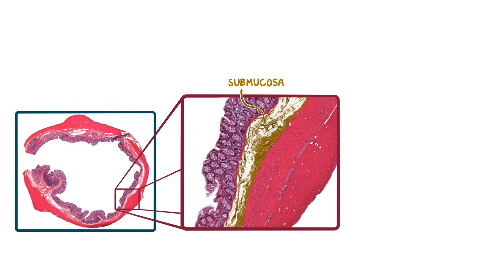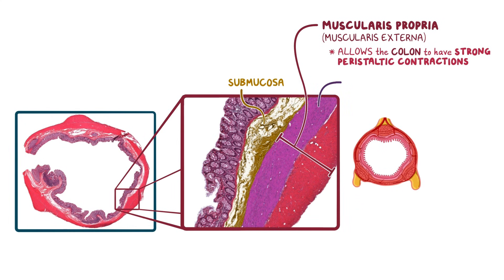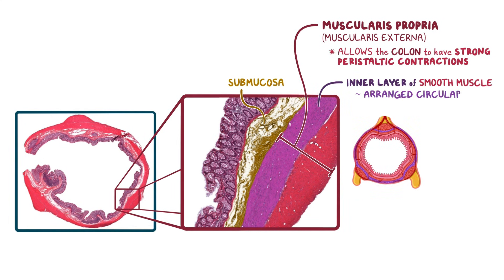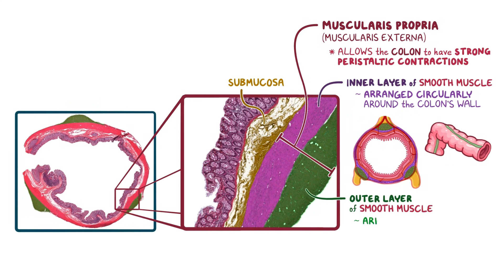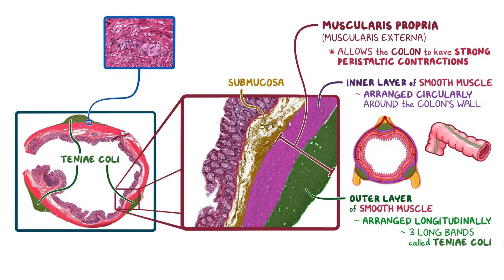Surrounding the submucosa is the next main layer of the colon wall, called the muscularis propria, or muscularis externa. The thick muscularis propria allows the colon to have strong peristaltic or wave-like contractions to help move the feces through its lumen. The inner layer of smooth muscle is arranged circularly around the colon's wall, and the outer layer is arranged longitudinally, organized into three long bands of muscle called tinea coli. Between the two layers of muscle, we can see cross sections of nerves from the myenteric or Auerbach's plexus, which is responsible for innervating the muscle fibers of the muscularis propria.